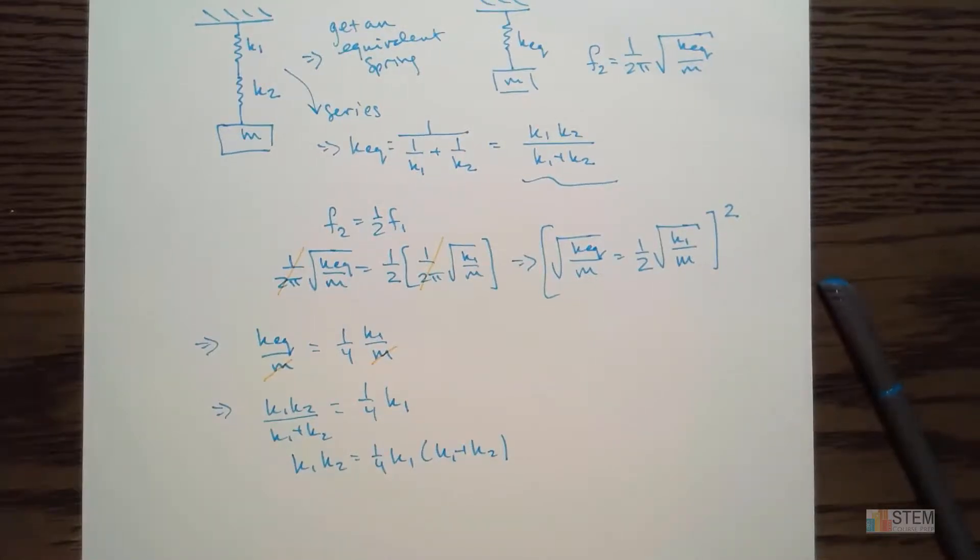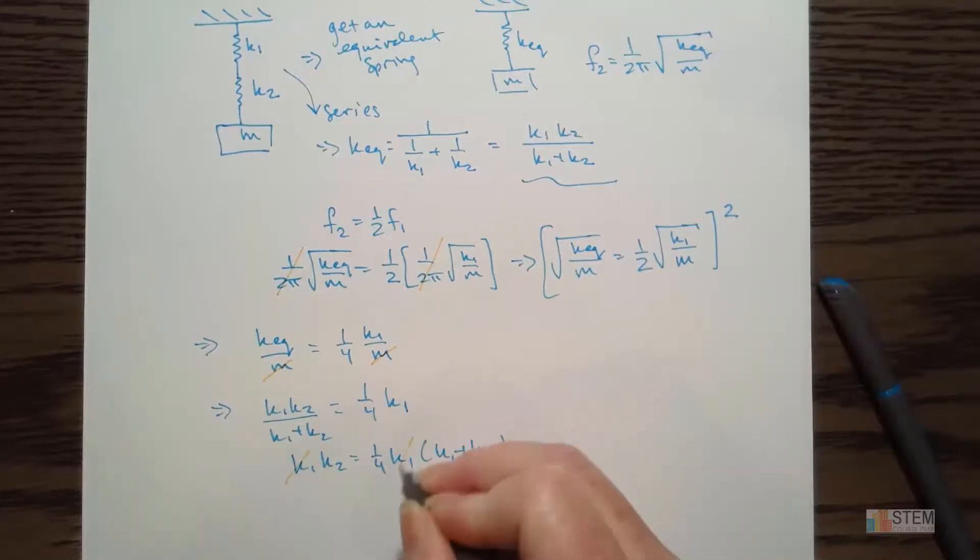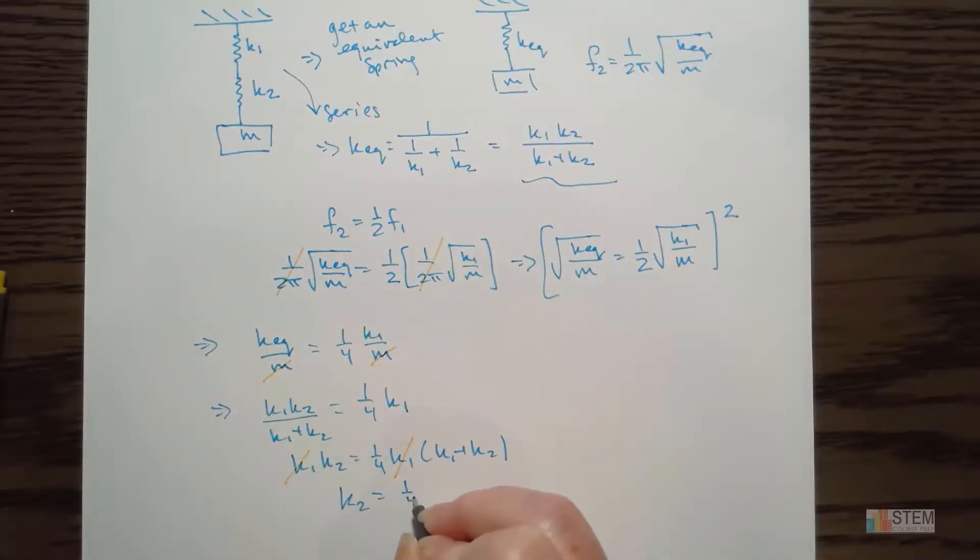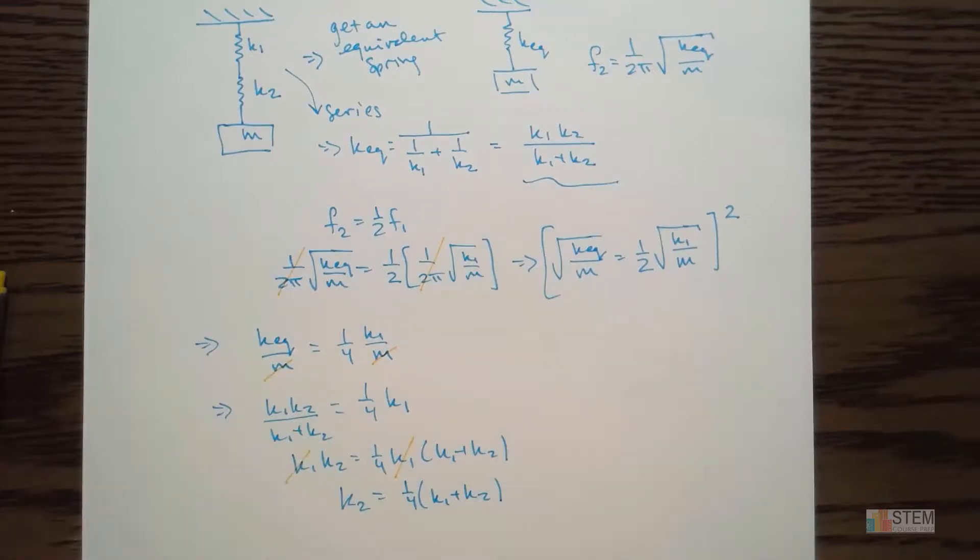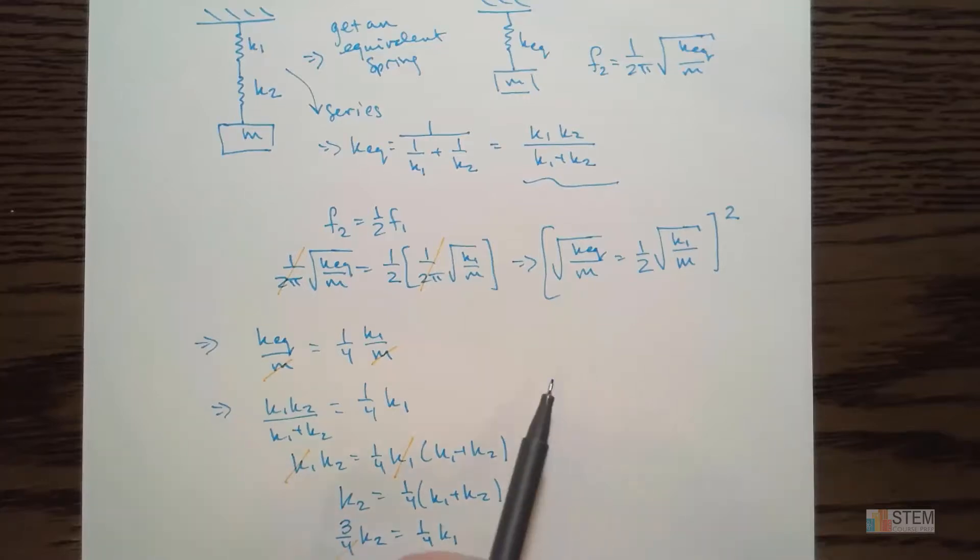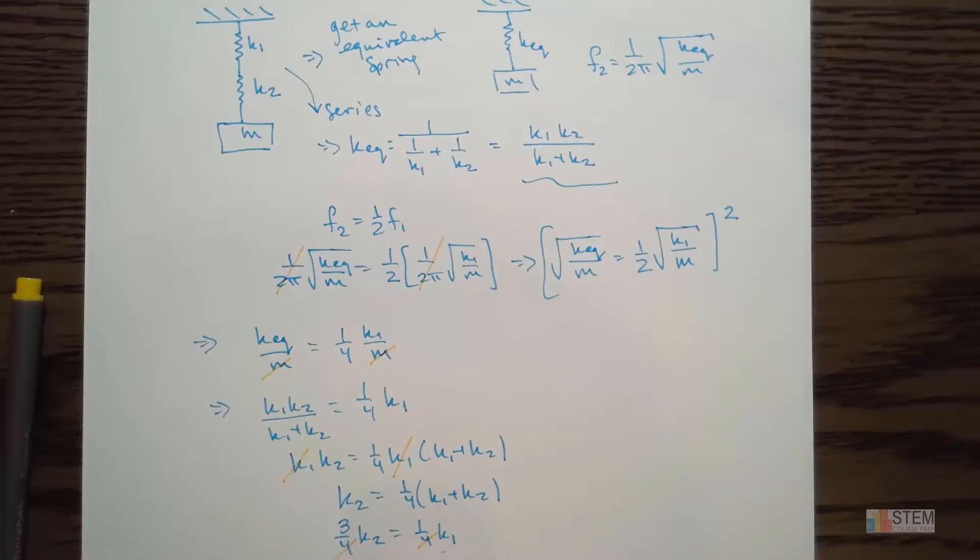And it looks like we've got something that will cancel. This k1 cancels with that. That leaves us with k2 is 1 fourth k1 plus k2. And then last thing, I need to group up my k2 terms because I have one here and I have one here. So if this is 1 fourth k2, I move it over. Basically we have 4 over 4 minus 1 fourth. So we're going to have 3 fourths k2 equals 1 fourth k1. And then finally, you can simplify that. Notice the 4s are going to cancel. And then divide by the 3. So k2 is going to be 1 third k1.